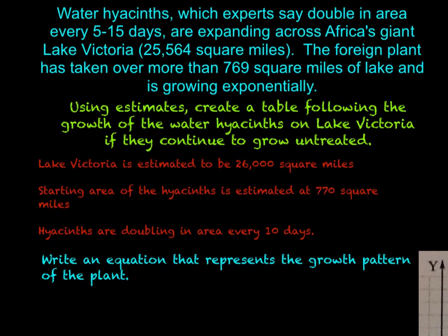Using estimates, create a table following the growth of the water hyacinths on Lake Victoria if they continue to grow untreated. We need to look at some of the estimates they're providing to us. Lake Victoria is estimated to be approximately 26,000 square miles. The starting area of the water hyacinths is 770 square miles, and the hyacinths are doubling in area every 10 days. So we're taking an average between the 5 and the 15 days.